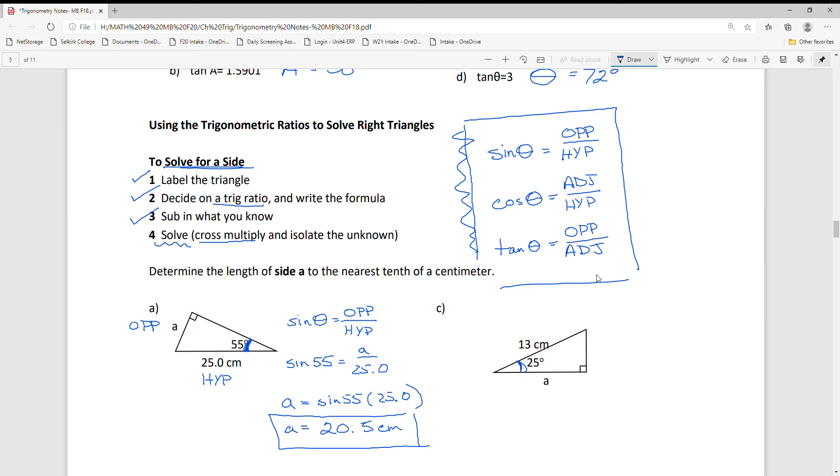Let's do another one. Label the triangle - the hypotenuse is the easiest. I'm going to choose my trig ratio. This one uses the cosine function, adjacent over hypotenuse, because those are the pieces I have. Sub in what I know: cos of 25, adjacent is A, hypotenuse is 13.